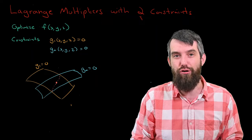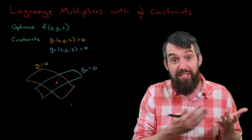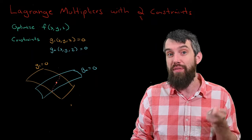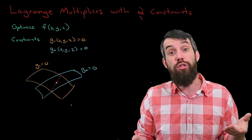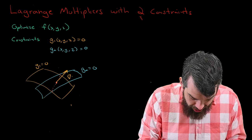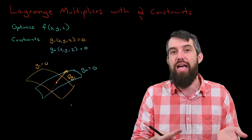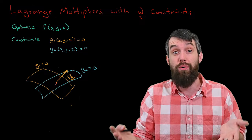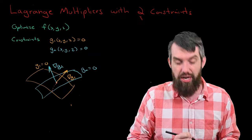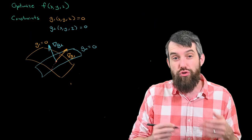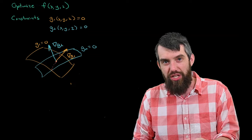Imagine you're sitting at some point on that curve, because the curve represents solutions to g1 and g2 equal to zero at the same time. So what we're really saying is optimizing f subject to the fact that you live on this intersection curve. At some point on that intersection curve, there are a couple of relevant vectors. The first is the normal to the g1 surface, given by the gradient of g1. The gradient of a level surface is normal to that surface.